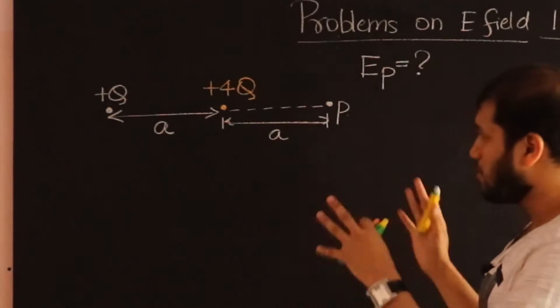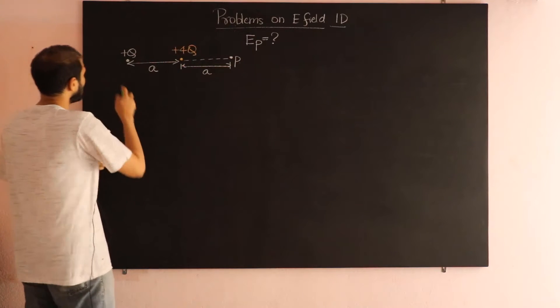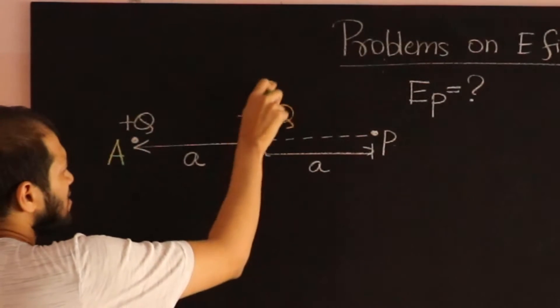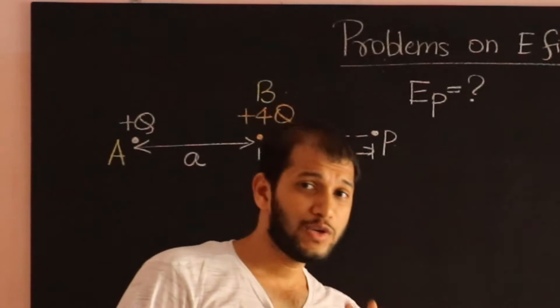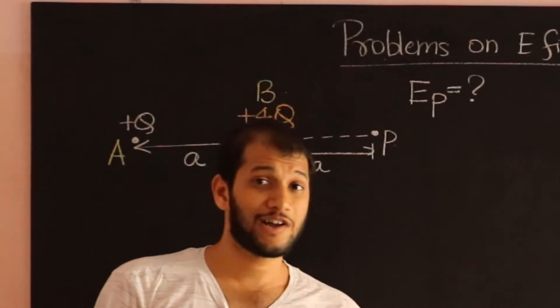To tackle this problem, the first step will be to label the charges. Let's call this charge A and this charge B. Once we do that, we are going to calculate the electric field at point P due to each charge separately.